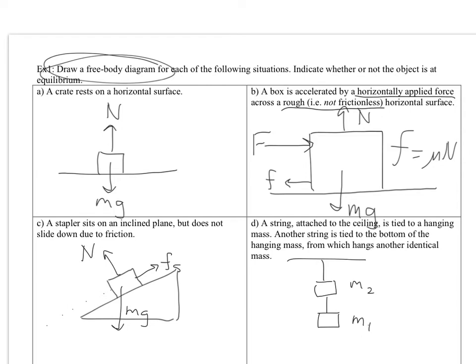And we'll call the tension in the lower section of string T1. Alright, well, T1 is going to pull up on the bottom mass. T1. Meanwhile, gravity will pull down on it. So I'll label that M1G. Alright, for the top block, we have tension 2 pulling up on it.